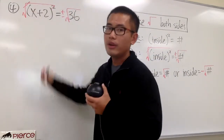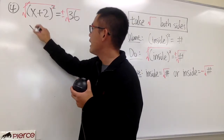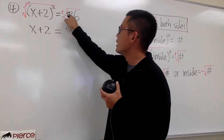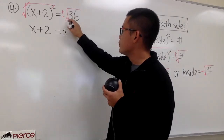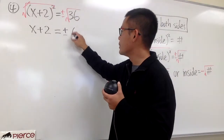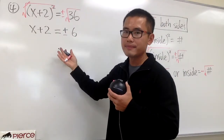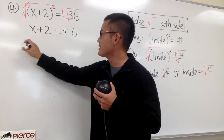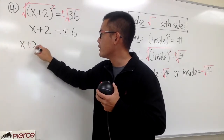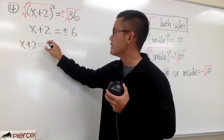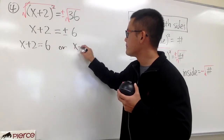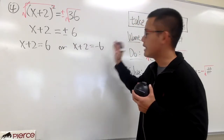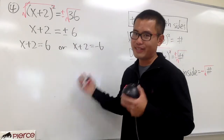The square and square root cancel, and we'll just end up with the inside, which is x plus 2. This is equal to — keep the plus-minus like this — and you do the square root of 36, which is just going to be 6. Now this is technically two equations. This means we have to do x plus 2 equals to positive 6, or x plus 2 equals to negative 6.